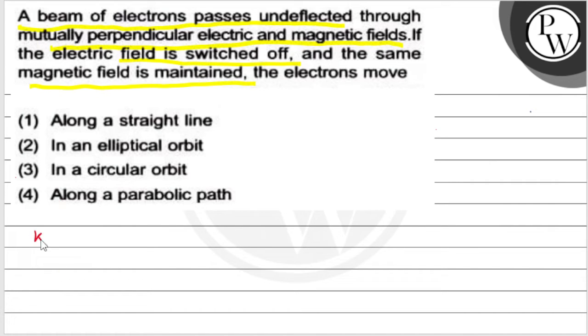First of all, we will use the Lorentz force. So according to Lorentz force, total magnetic force in the presence of both electric and magnetic field is Fe plus Fm. Here Fe is the electrostatic force, which is QE, plus Fm is the magnetic force, which is Q V cross B.